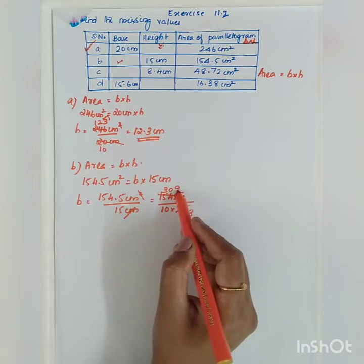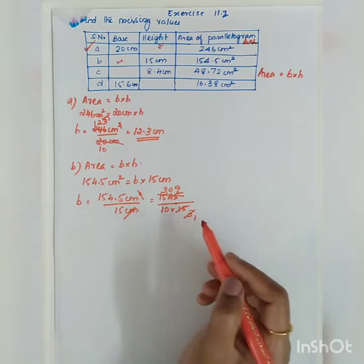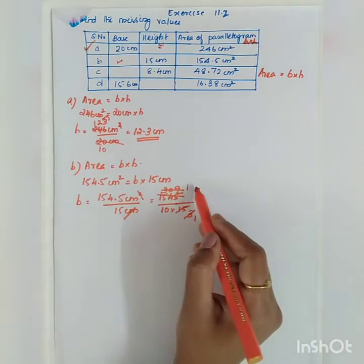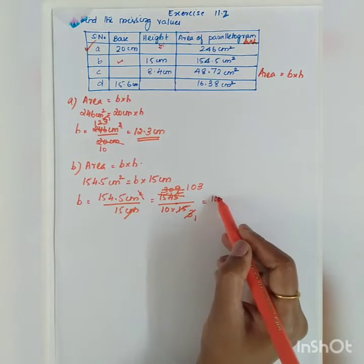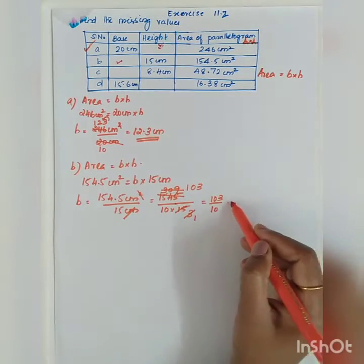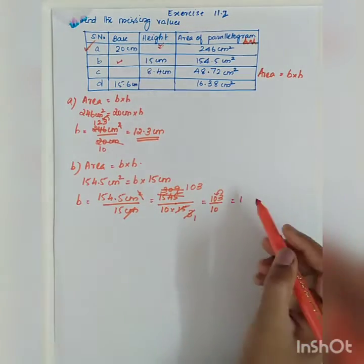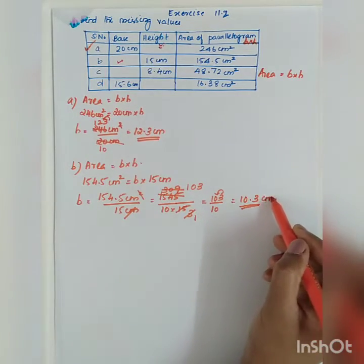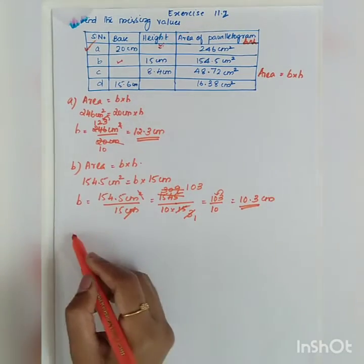Continuing: 9 fives are 45, which is divisible by 3. After simplification we get 1, 0, 3 divided by 10. Again we shift one decimal digit, giving us 10.3 centimeter.